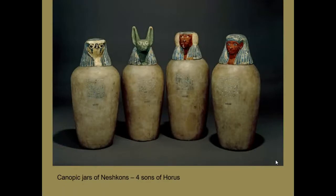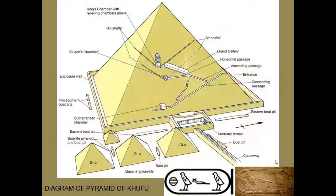In the process of mummification, the internal organs would be removed and preserved. Hearts were often returned to the body. The brain was removed and discarded completely, but the liver, intestines, and lungs would be removed and stored in so-called canopic jars. The heads on the canopic jars are related to the children of the god Osiris, each watching over the deceased in the afterlife.